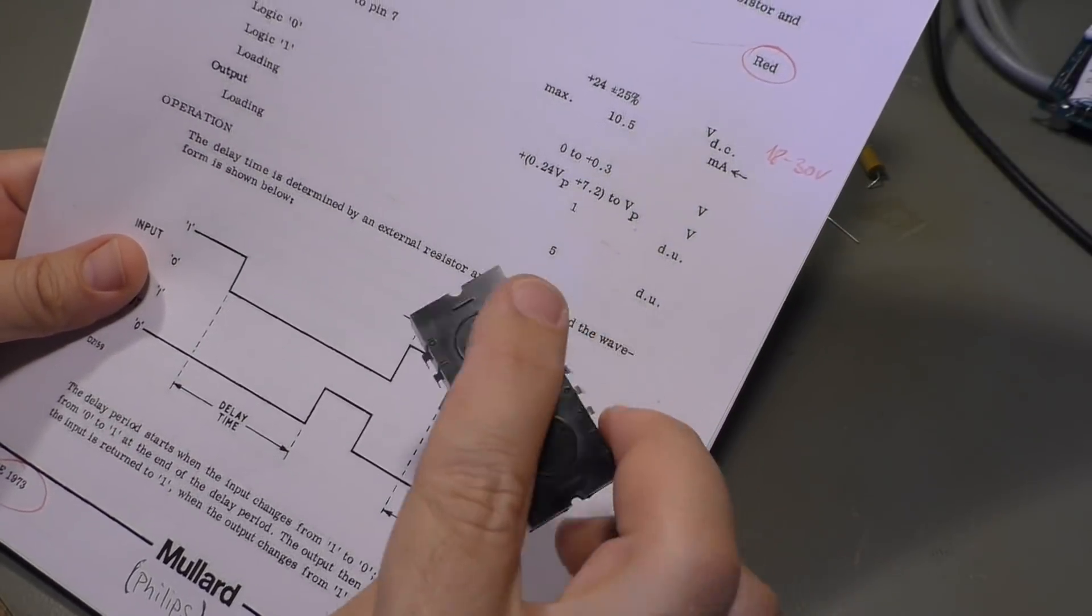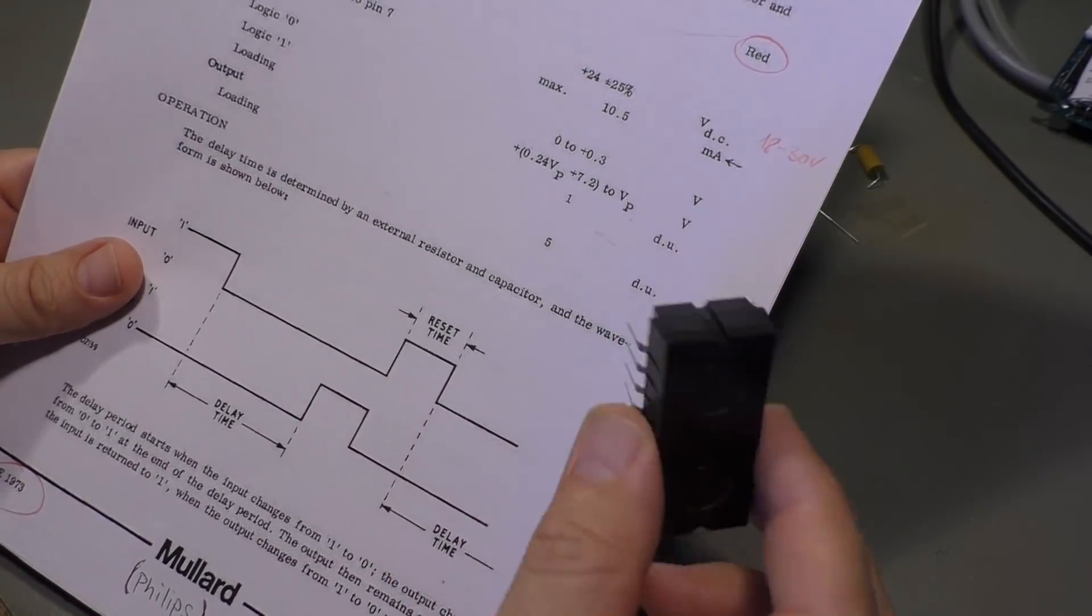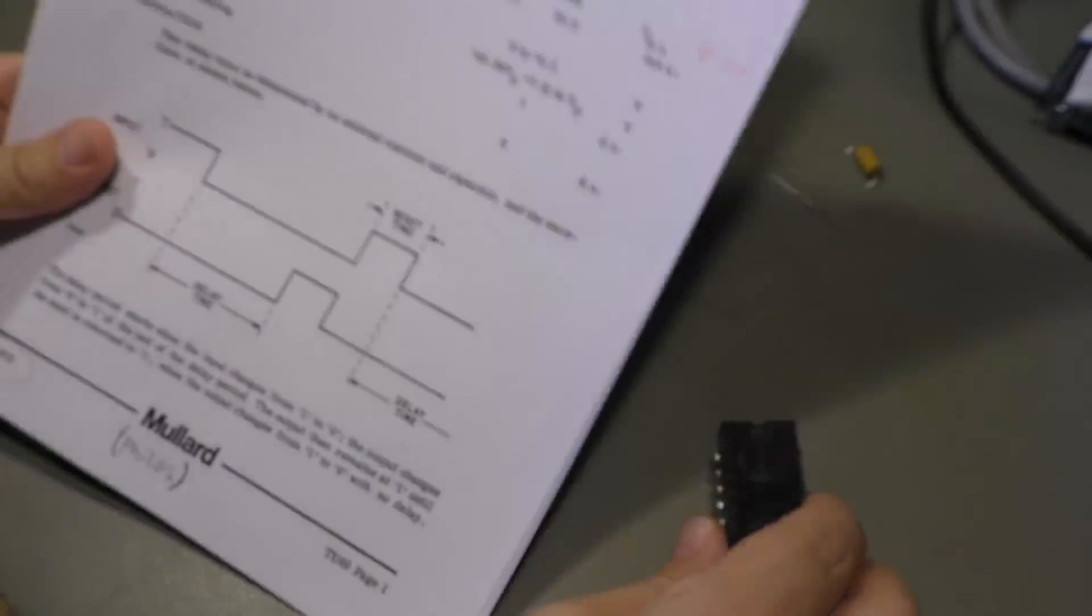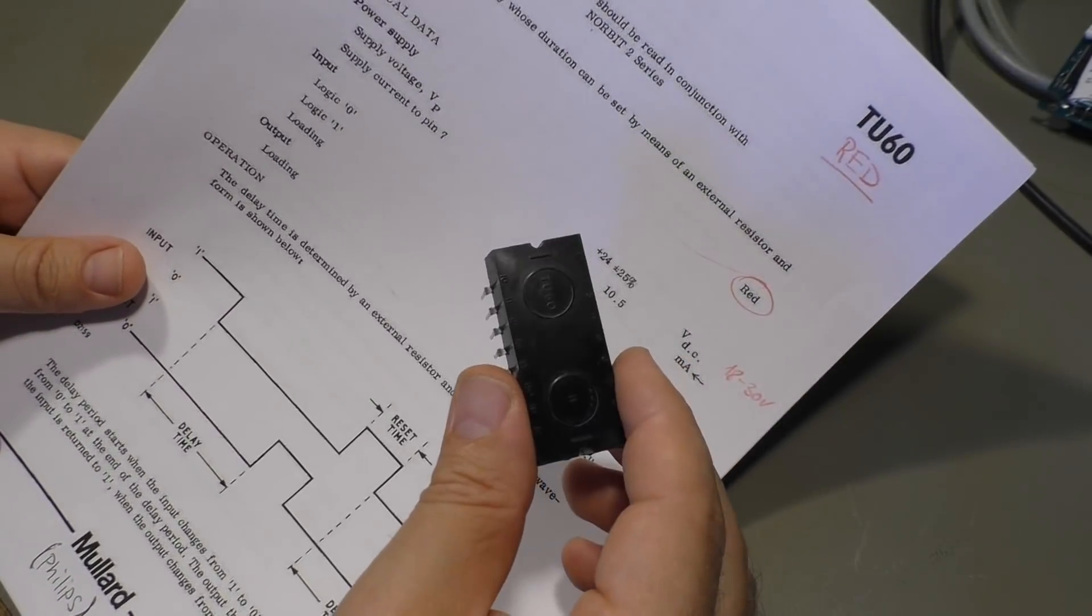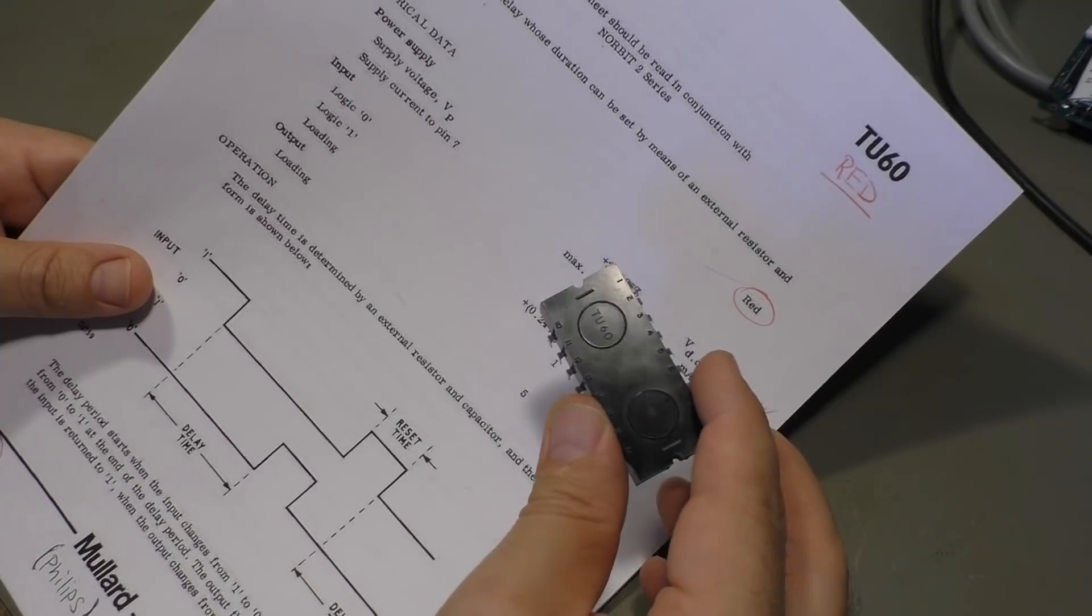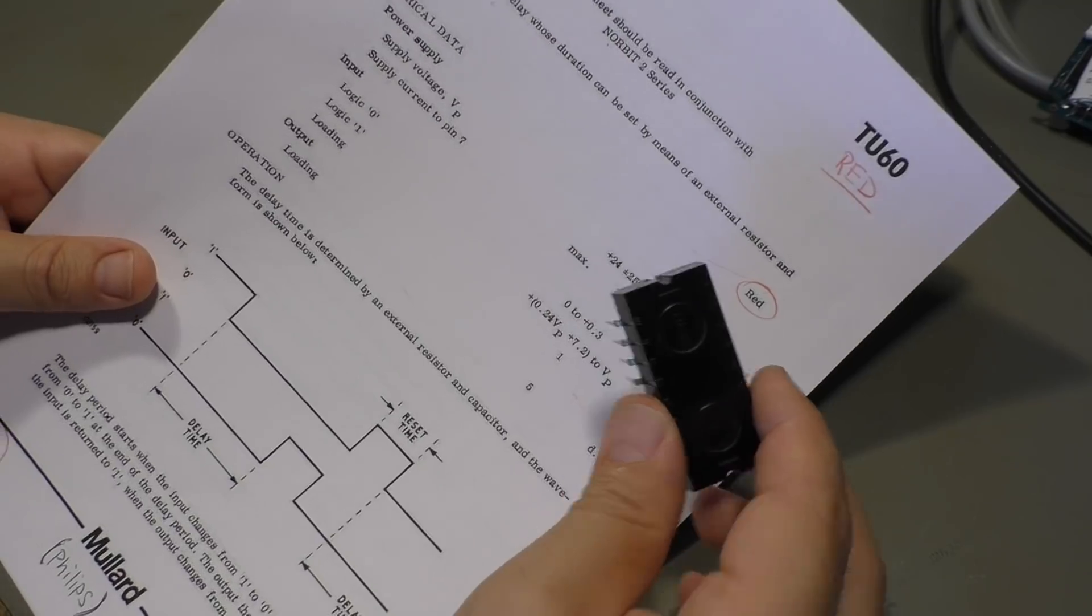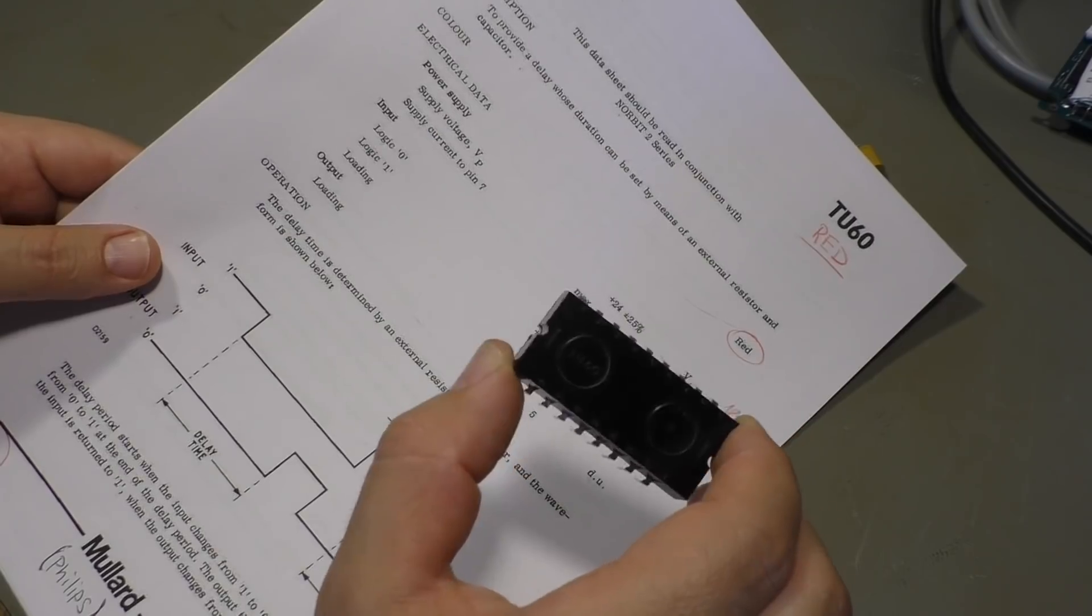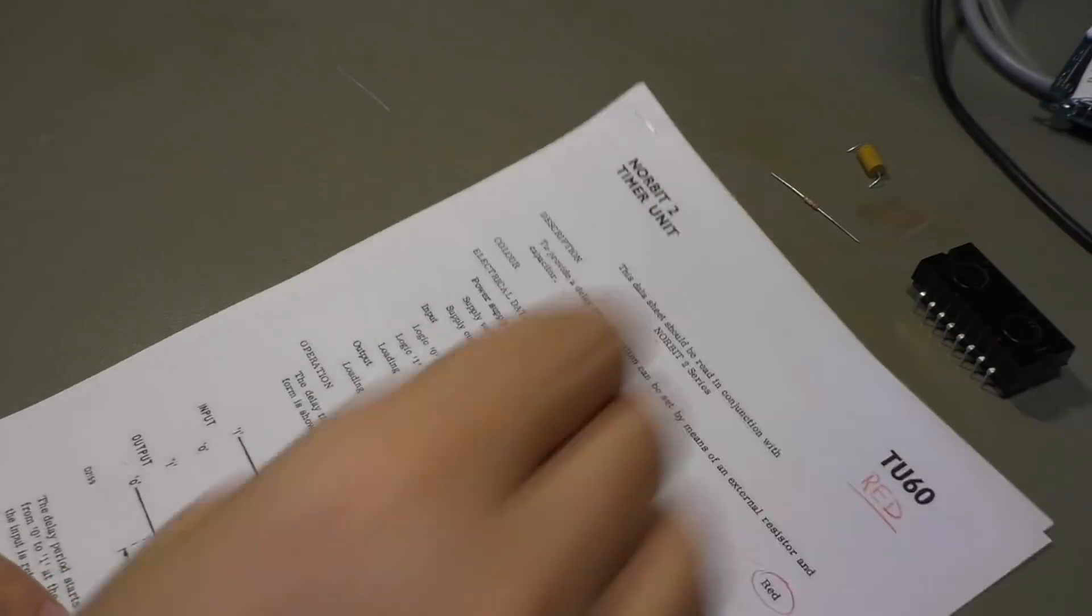Let's see what it is and how they used it in 1973 or maybe before that. These Norbit chips have been around since the early 1960s. They've been replaced by the 74 TTL chips as we know them today. It's a family of logic chips.